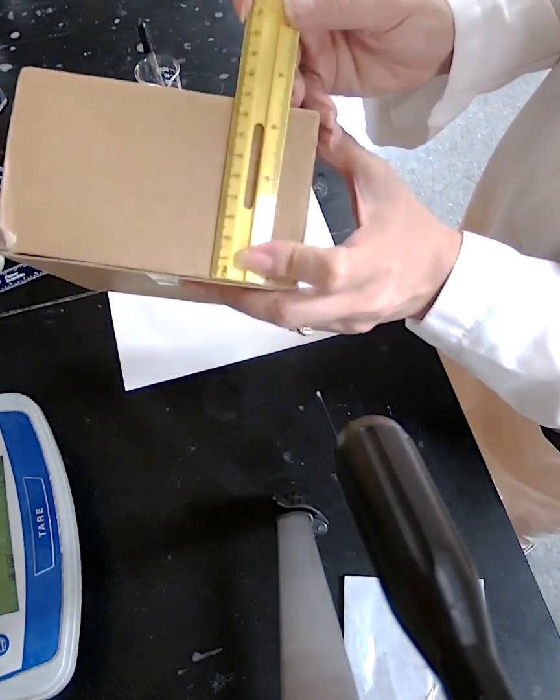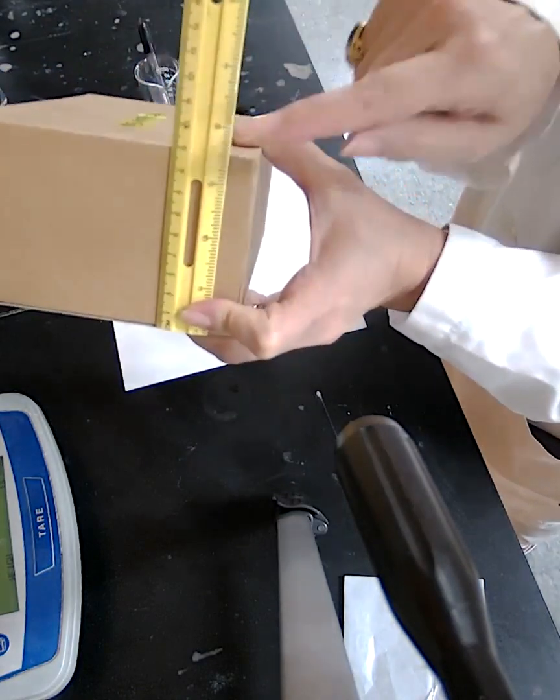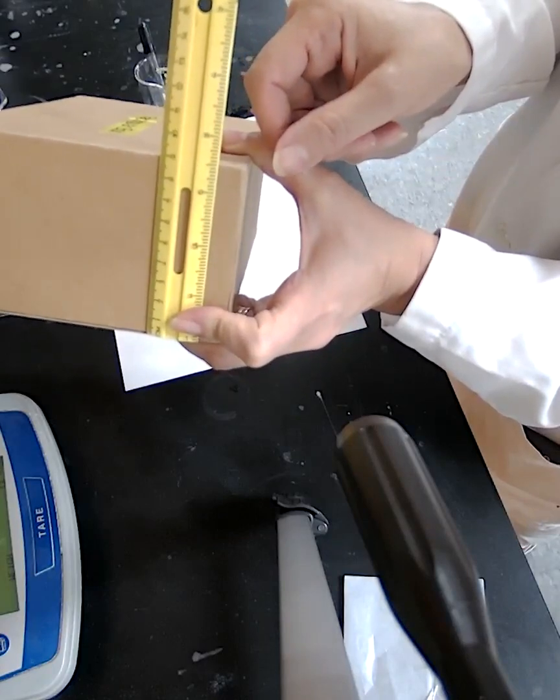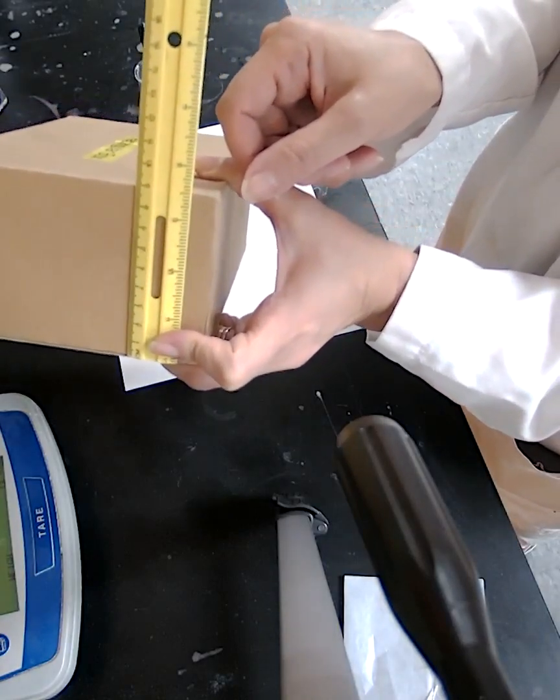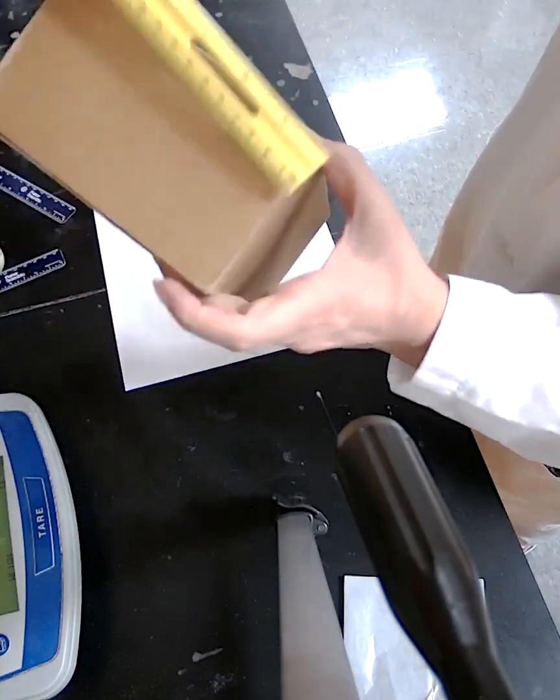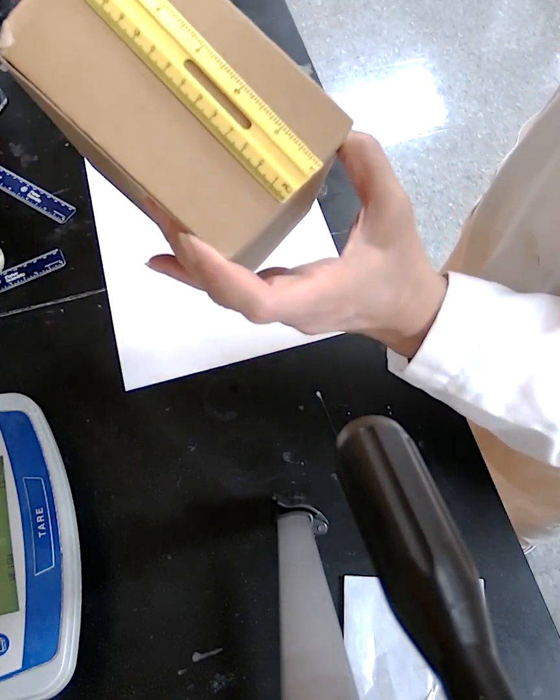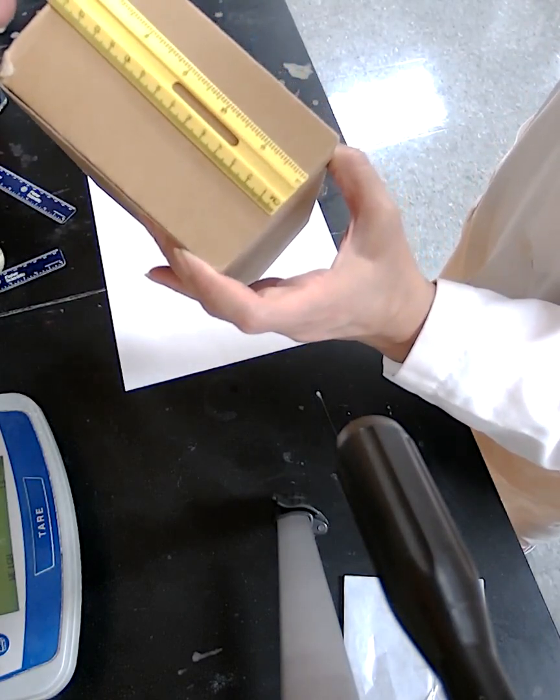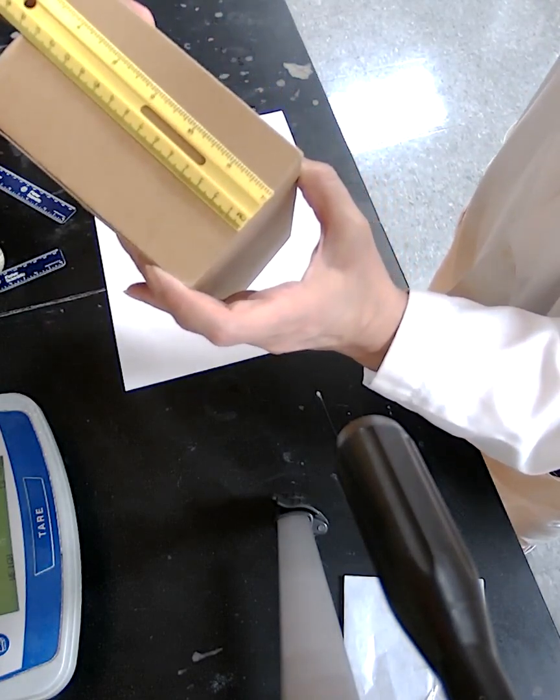Align the zero to one end, then make sure at the other end you read the numbers including the estimated digit. When you record the three measurements, you can then do the calculation for volume.